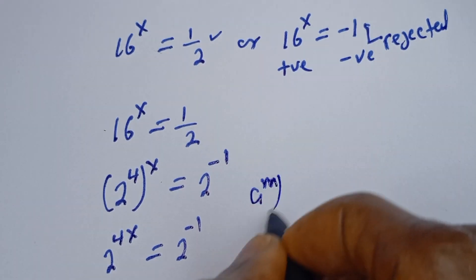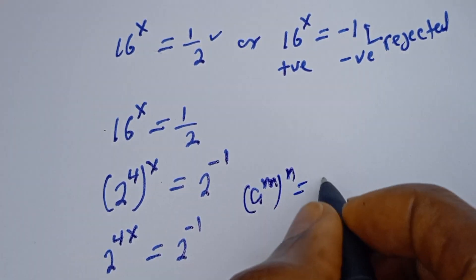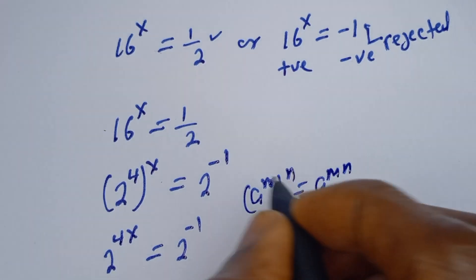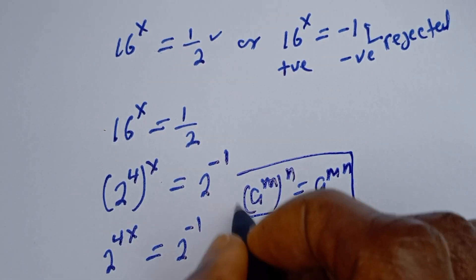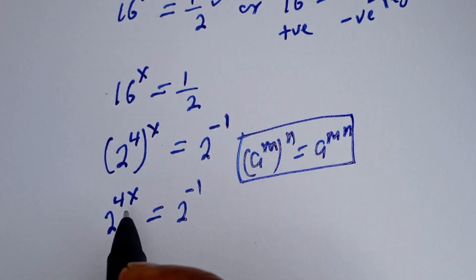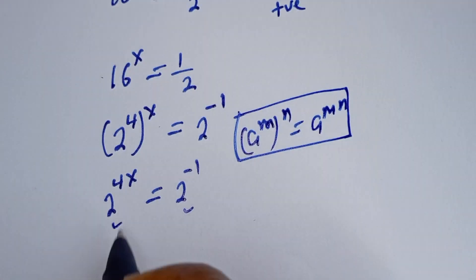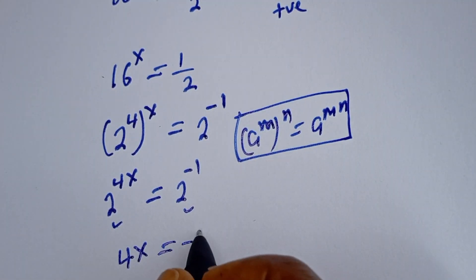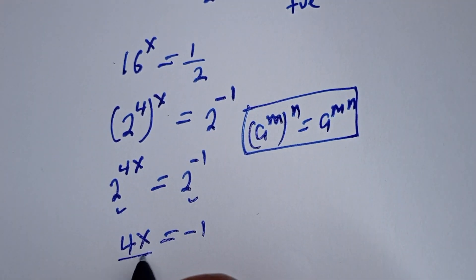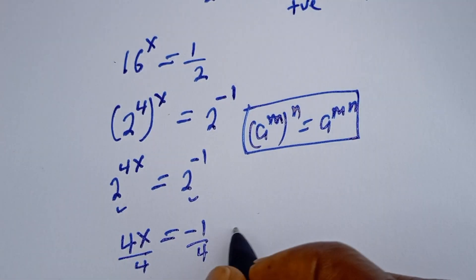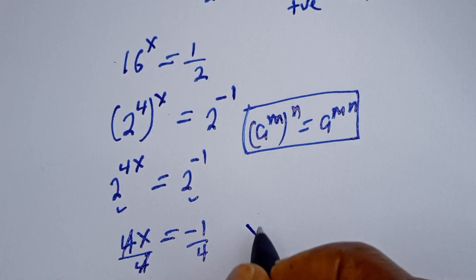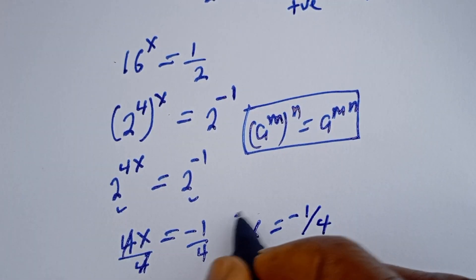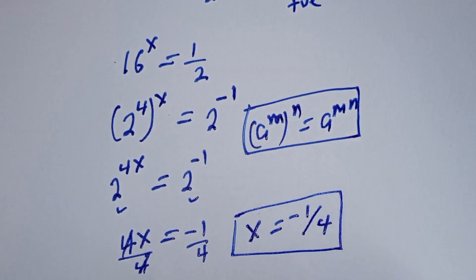Using the rule that a raised to power m to the power of n equals a raised to power mn, and because the bases are the same, we have 4s is equal to minus 1. Dividing both sides by 4, s is equal to minus 1 over 4. This is the final answer.